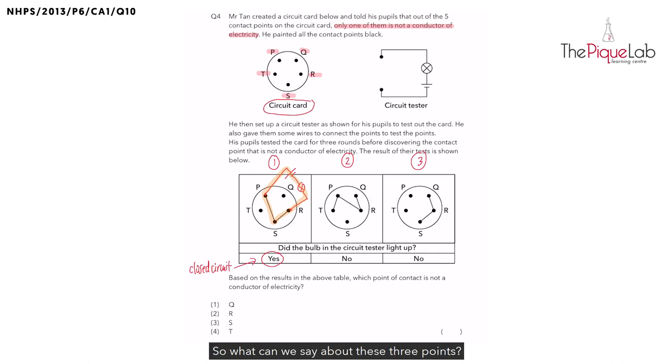So what can we say about these three points? Are they conductors or insulators of electricity? They are definitely conductors of electricity since electricity can flow through them. I'm going to use the symbol C for conductors of electricity to label these three points.